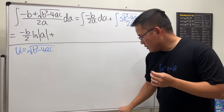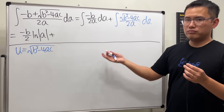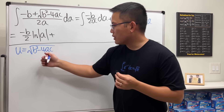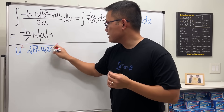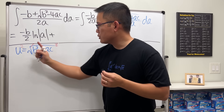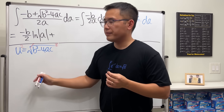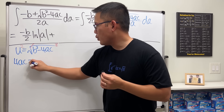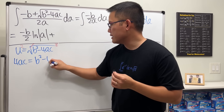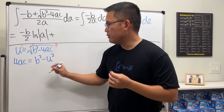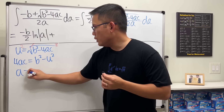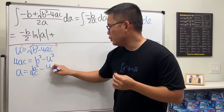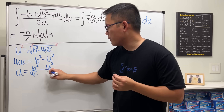We still need to get da, so let's isolate a first. Squaring both sides: u² = b² − 4ac, which gives 4ac = b² − u². Dividing through by 4c: a = b²/(4c) − u²/(4c).